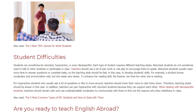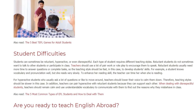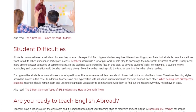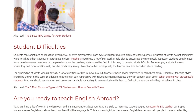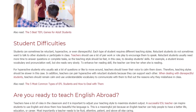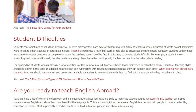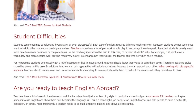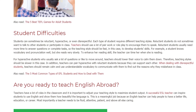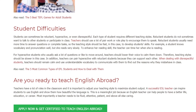For hyperactive students who usually ask a lot of questions or like to move around, teachers should lower their voice to calm them down. Therefore, teaching styles should be slower in this case. In addition, teachers can pair hyperactive with reluctant students because they can support each other. When dealing with disrespectful students, teachers should remain calm and use understandable vocabulary to communicate with them to find out the reasons why they misbehave in class.